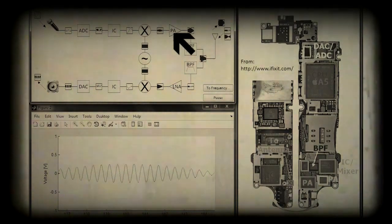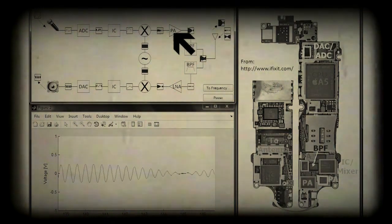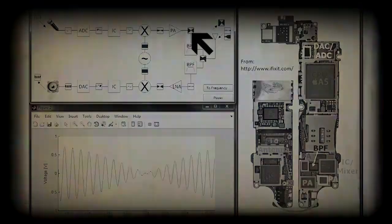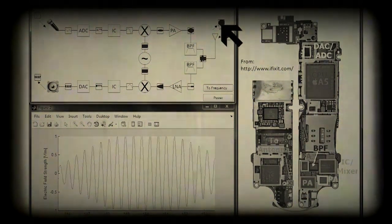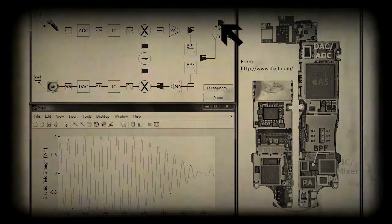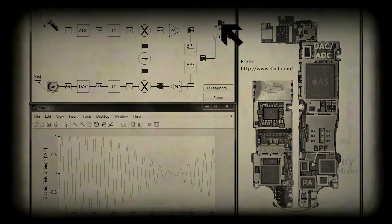But we want to pump, pump, pump the power in so that we have enough strength to send that signal all the way to the cell phone tower via the antenna. And it will become an electromagnetic wave on its way through the air.